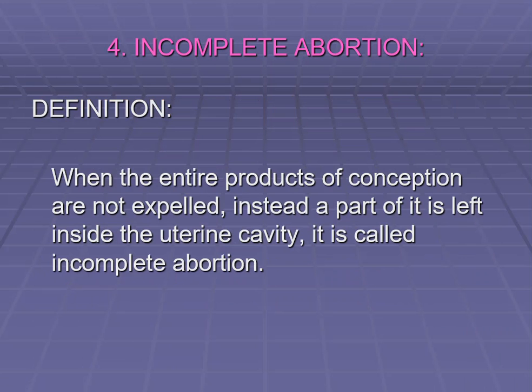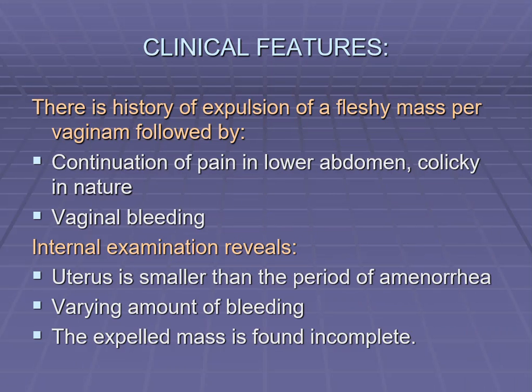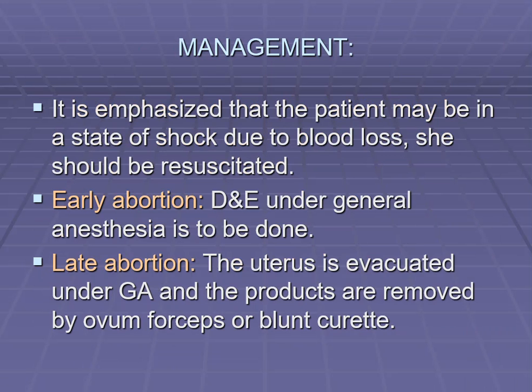Incomplete abortion means some products are still inside the uterine cavity. When the entire products of conception are not expelled and a part is left inside, it is called incomplete abortion. Features include continuation of pain in the lower abdomen, which is colicky in nature, and continuous vaginal bleeding. Internal examination shows the uterus smaller than the period of amenorrhea, and the mass is found incomplete. Management includes resuscitation by blood transfusion and IV fluids; for early abortion, dilatation and evacuation; for late abortion, products are removed by ovum forceps and blunt curettage.